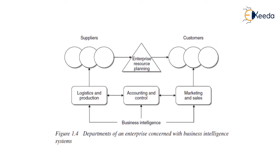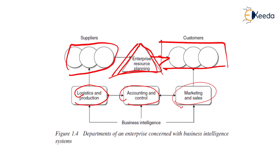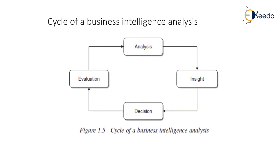Next are the enterprise departments concerned with business intelligence. A supplier provides data through enterprise resource planning. After getting the data in a properly planned format, it is passed to the customer, but first you must perform logistics, accounting control, and marketing of sales.